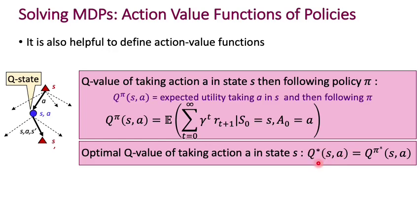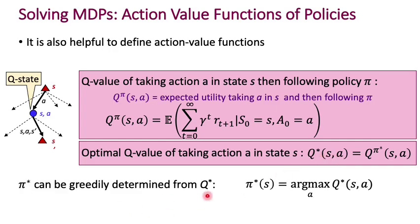Q* tells you what utility is gained by executing action a at state s and then following the optimal policy. That means you don't need to worry about what happens after the first step, because afterwards you're guaranteed to be following the optimal policy. So all you have to optimize over is that first action a. Specifically, you can greedily determine pi* from Q* by setting pi*(s) = argmax_a Q*(s, a) — the action that maximizes Q*(s, a) is the action output by the optimal policy.